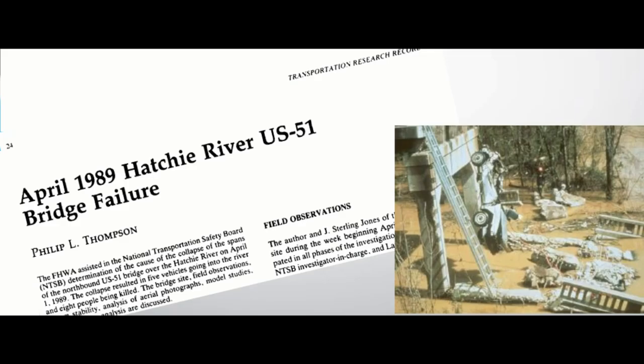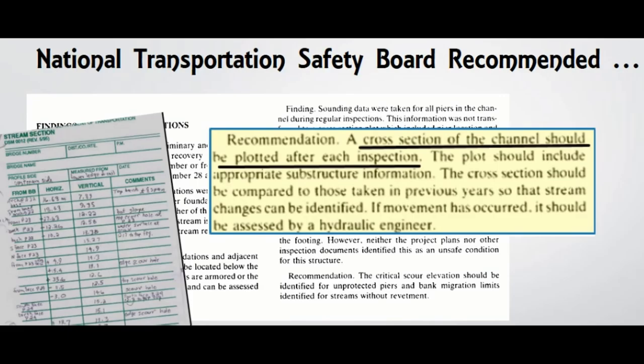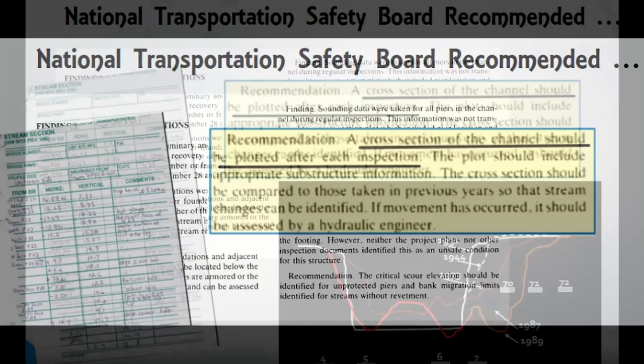A tragic example of such movement occurred in 1989 at the Hatchee River in Tennessee. One key recommendation from the National Transportation Safety Board regarding this vulnerable area showed the need to plot cross-sections after every inspection, showing the appropriate substructure information.